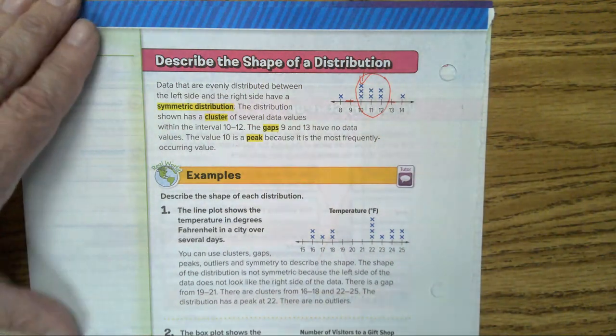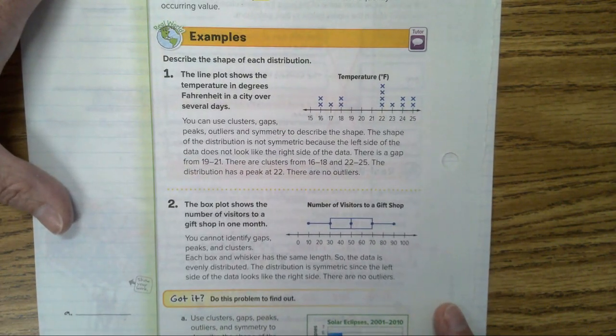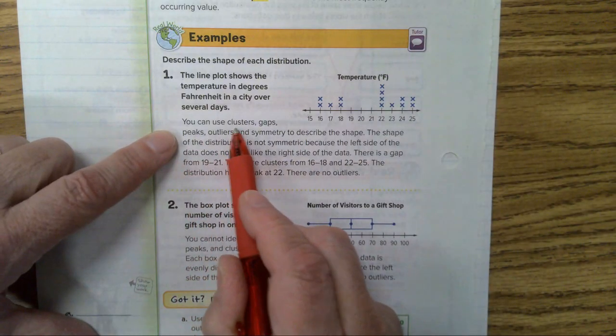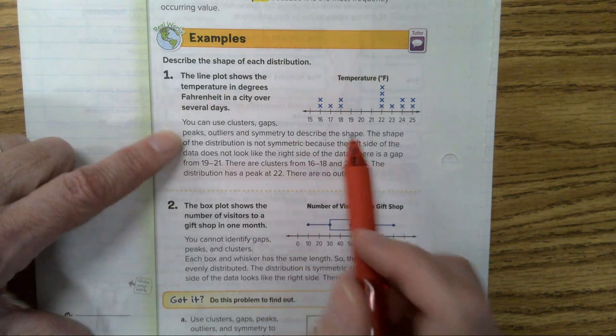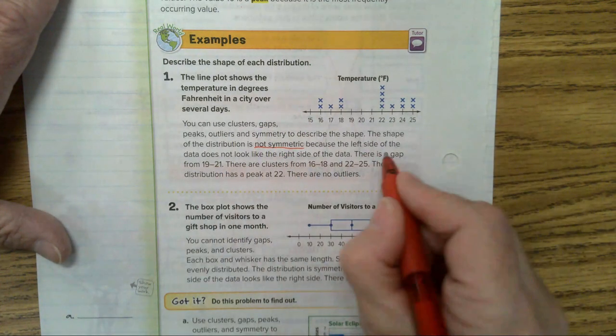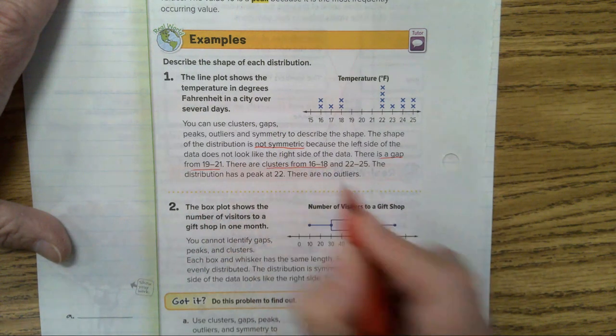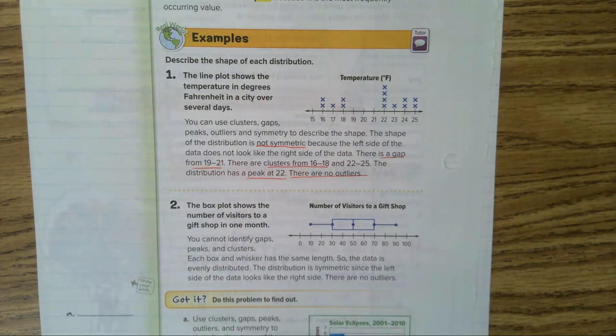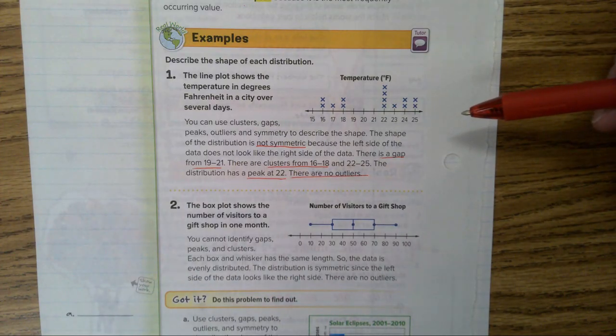I thought you all knew the definitions of those words. So let's look at example one. Describe the shape of each distribution. Here's what they said. The first thing you notice is the gap. You can use clusters, gaps, peaks, outliers, and symmetry to describe the shape. The shape of the distribution is not symmetric. There is a gap. And there's a cluster. There are no outliers. And the peak. See how easy it is to describe this? In math, I think sometimes it's easier to describe things in math than it is in literature. It's obvious in math. It's like gap, peak, cluster, not symmetric. I mean, all of those things. It's so easy you don't think I should even ask you something like this. But that's what it is all about. Thumbs up. Can you all look at data and talk about it like this?